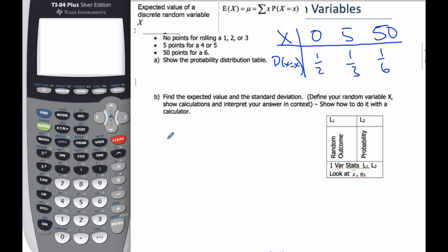And so what it says is I'm going to add product of x times its probability. So if I'm going to go and find my expected value of x, it's going to be zero times a half, plus five times a third, plus 50 times a sixth. And when I do that calculation, I end up getting 10. And so what this means is that on any roll, I can expect to get 10 points.